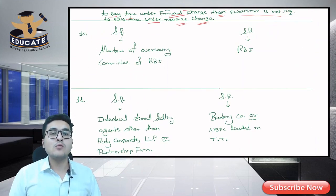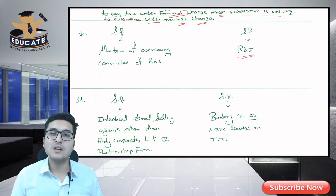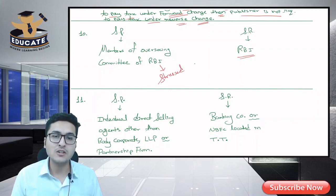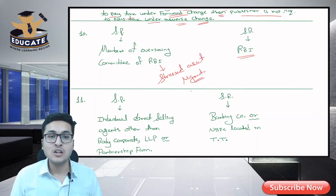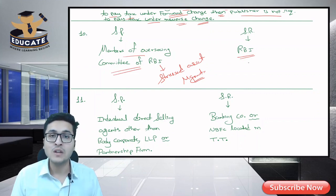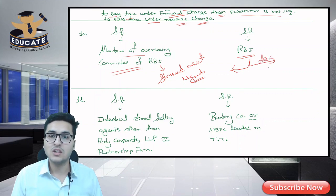Next: member of the overseeing committee of RBI. The service receiver is RBI. These members are not RBI employees — they are appointed for various functions, mainly for stressed asset management (NPAs of banks). They provide services to RBI regarding stressed asset management. RBI pays them consideration and pays the applicable tax directly to the government.